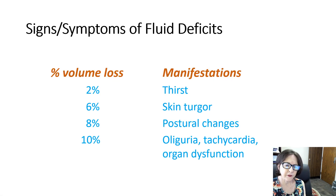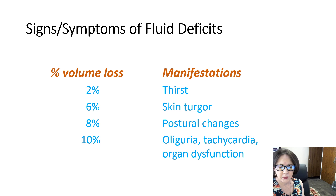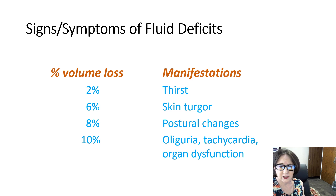Signs and symptoms of fluid deficits: small volume loss can lead to thirst, such as being out in the sun working and sweating. Six percent loss of body water can cause a decrease in skin turgor. Eight percent can lead to orthostatic changes — people stand up suddenly and get dizzy. Ten percent can cause organ dysfunction; think heart and kidneys, such as tachycardia and oliguria. On a hot day at 120 degrees, people are dropping with high heart rates and not urinating.